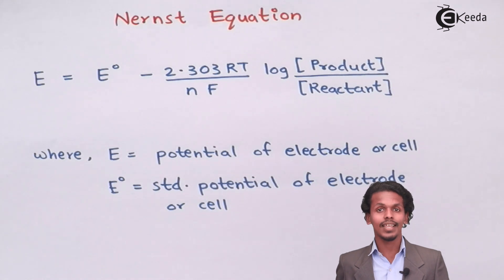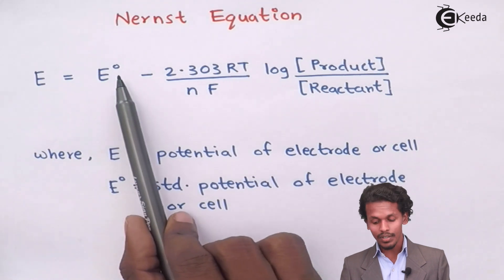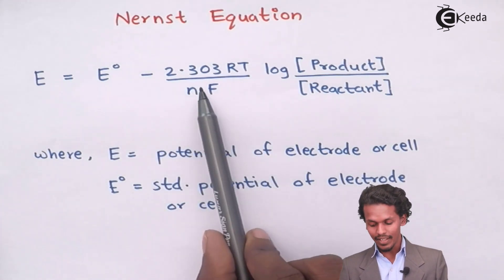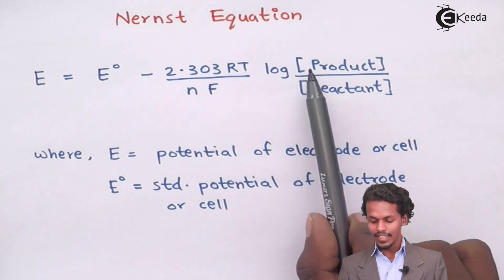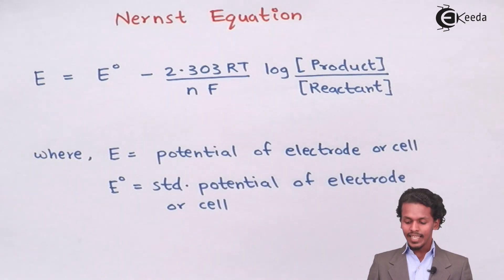Nernst equation is represented by the formula E equals E° minus 2.303RT divided by nF log to the base 10 of concentration of product divided by the concentration of the reactant.